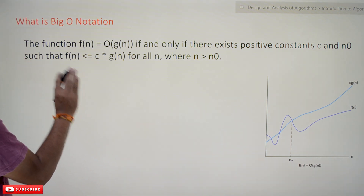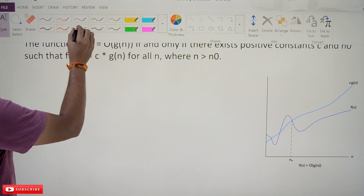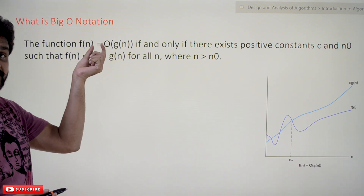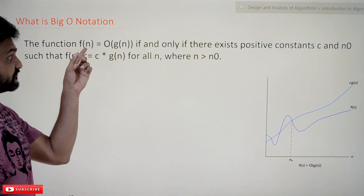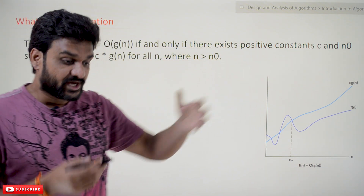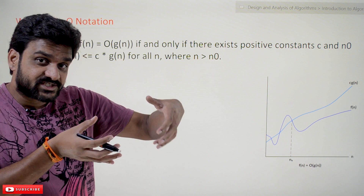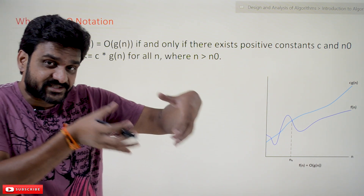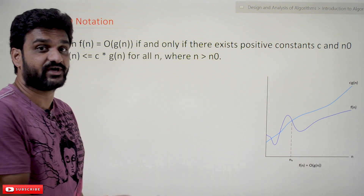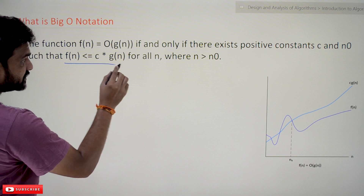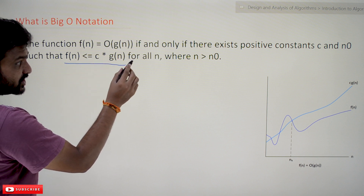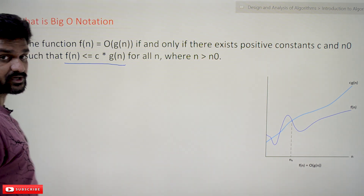The definition states that the function f(n) is Big O of g(n) — note it is not equals, it is a function relationship — f(n) is considered as Big O of g(n) if and only if there exist positive constants c and n₀ such that f(n) is always less than or equal to some constant c times g(n) for all values of n where n is greater than n₀.